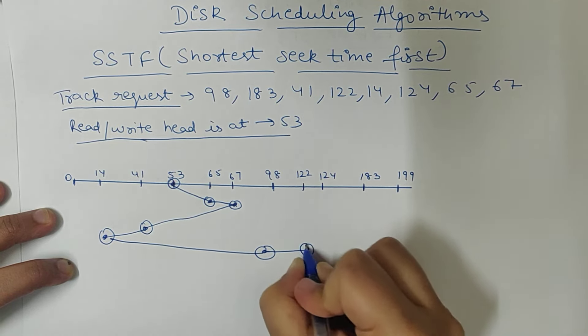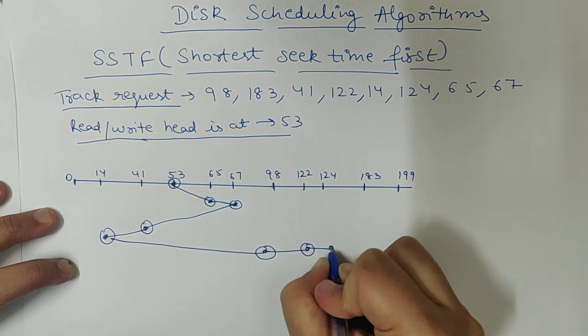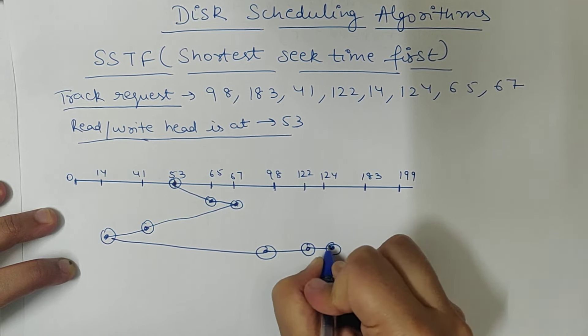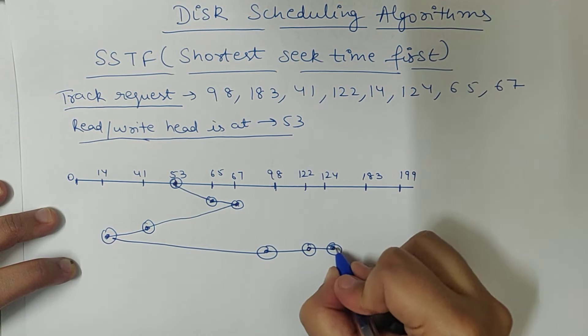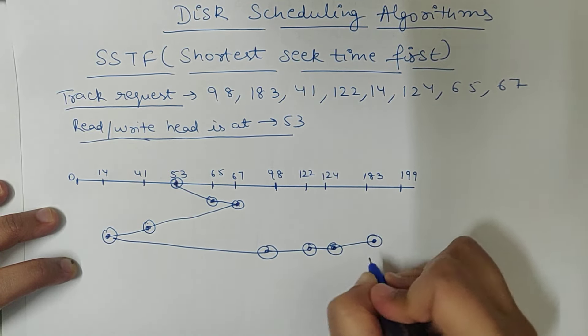122. Then, who is nearest? 124. After that, I think, 183. Then, who is nearest? 183. So, we need to do this so that the movement of the track is less.